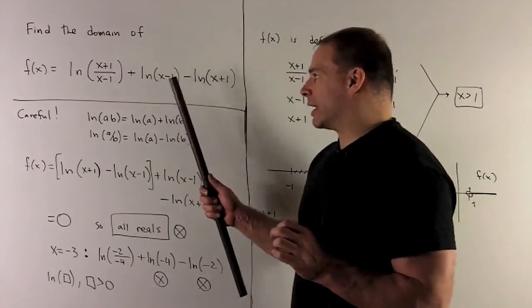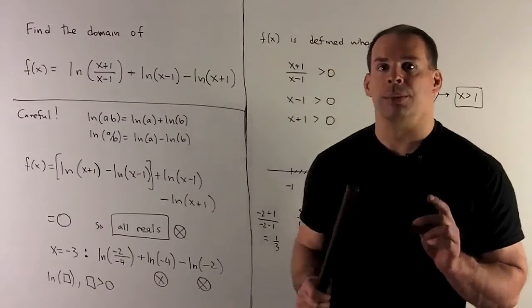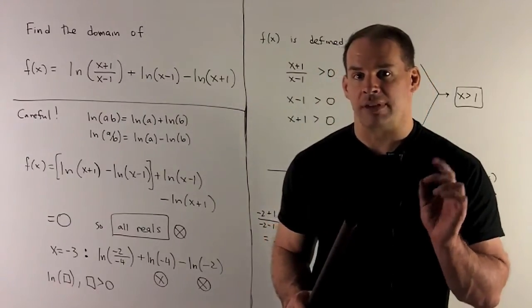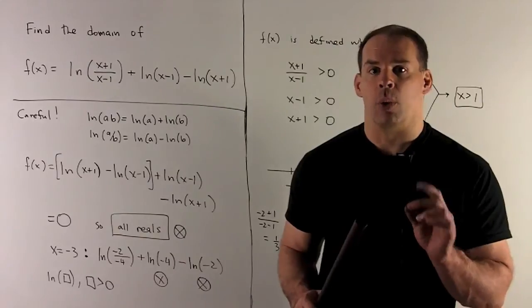Then I'm going to have natural log of minus 4, natural log of minus 2. That's bad. We're not allowed to take the natural log of a negative number. So what went wrong?